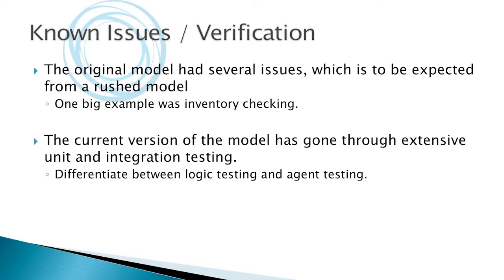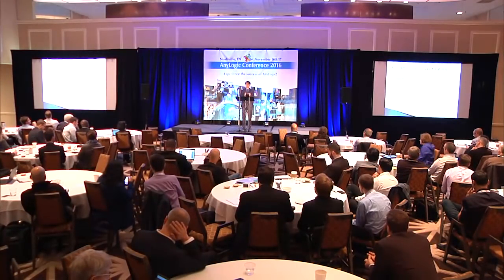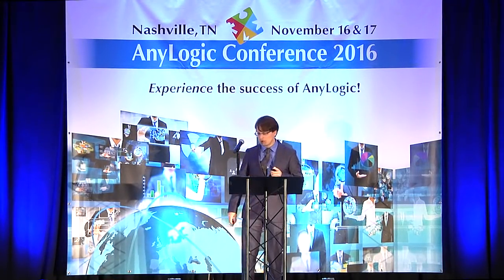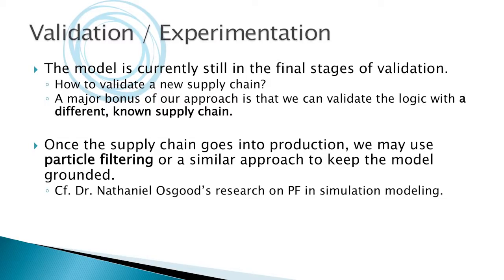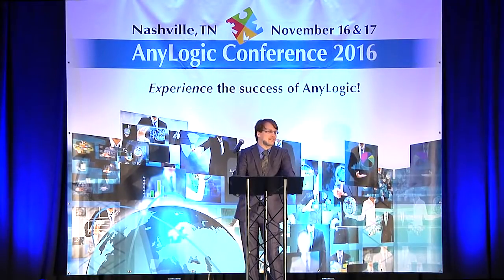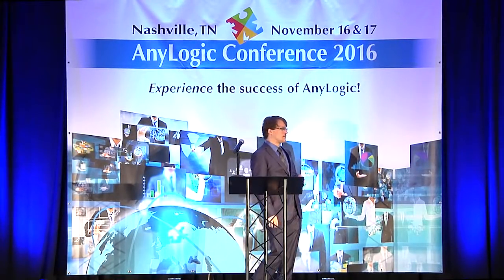The original model had known issues but was sufficient for answering workshop questions. The current version has gone through extensive testing — actually too extensive; I had to explain to the client that agents of the same type share the same logic, so you don't need to test every single agent. As for validation: how do you validate a supply chain that doesn't exist? We took an existing supply chain and configured the model to it — and actually got confirmation of successful validation just yesterday.